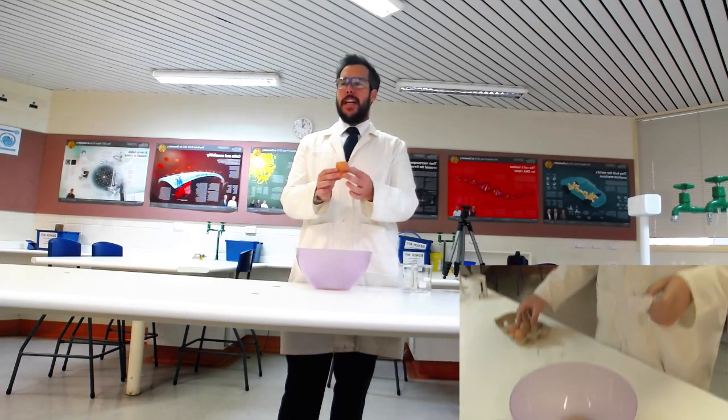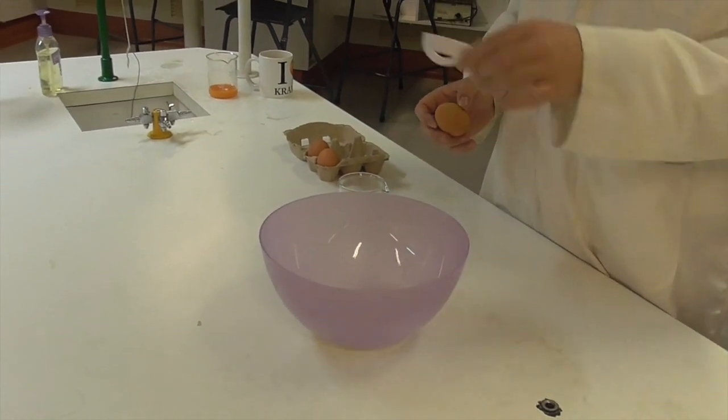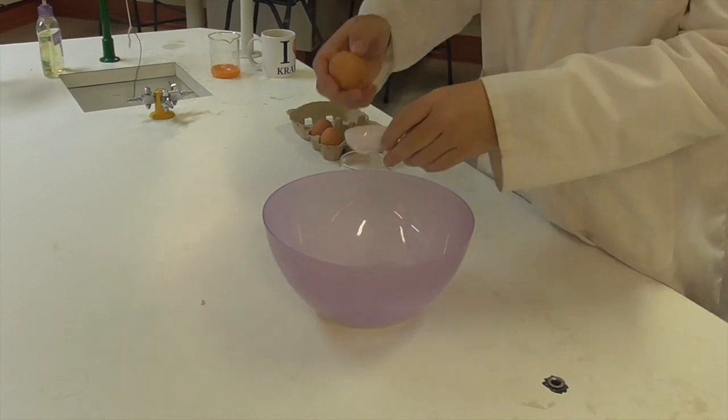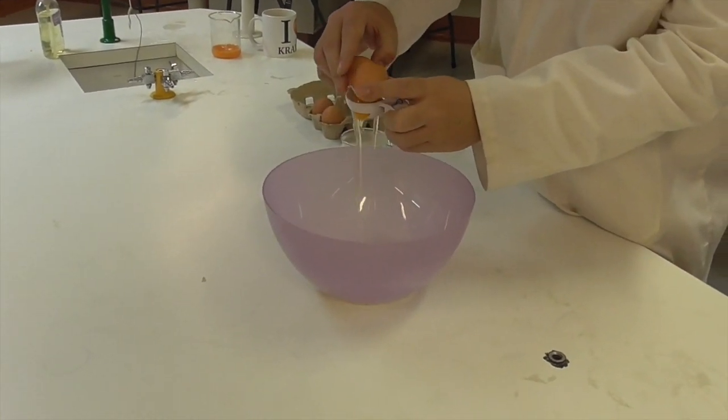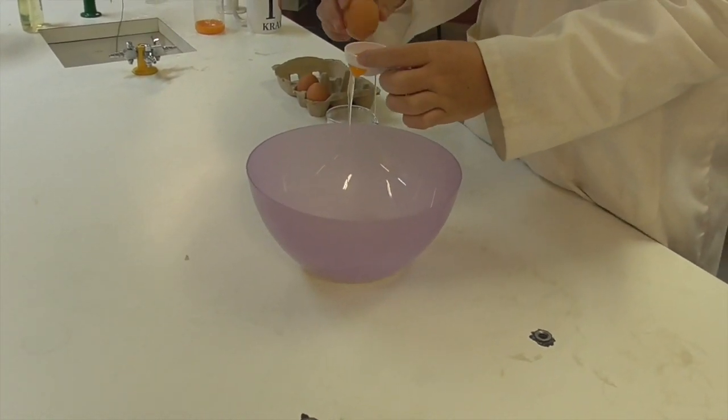Do not let any yolk get into your egg white mixture. If you're having trouble, you can use the egg dividing spoon. Ask your teacher. The white will drain out naturally.